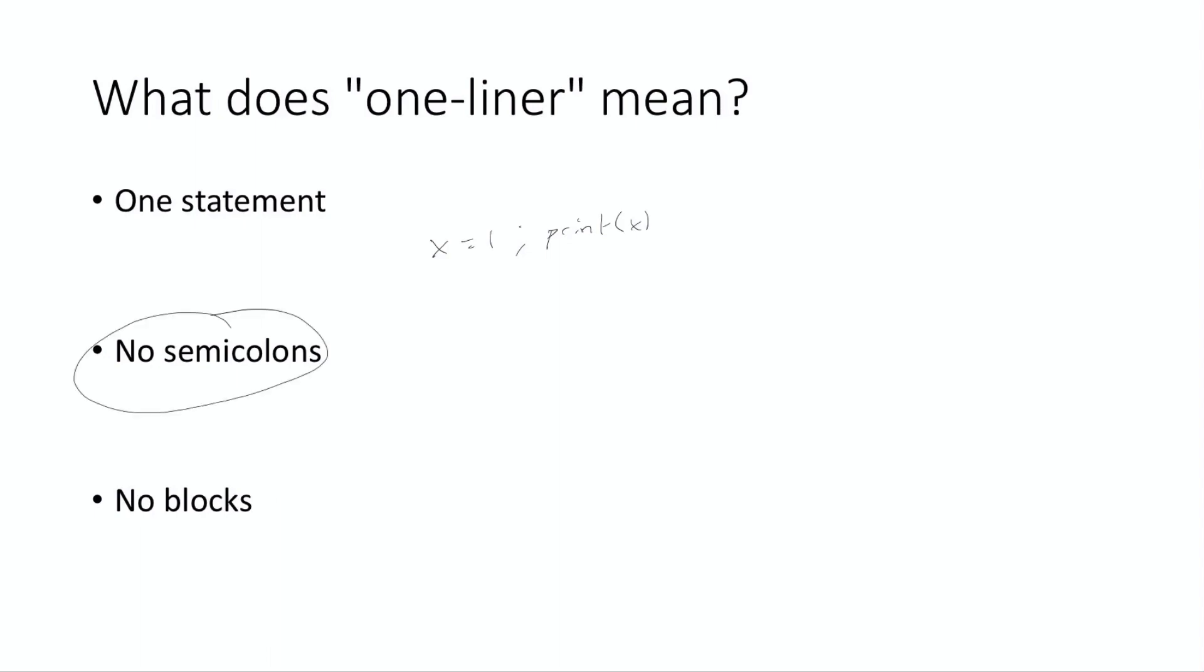The other rule is no blocks. You could do something like if x is equal to one print high. This is still one line, but the if statement is really a block. The way that you would normally write this is if x equals equals one and then the print statement would go in the next line indented over. Because we're using a block here, this is also not going to count as a one-liner.